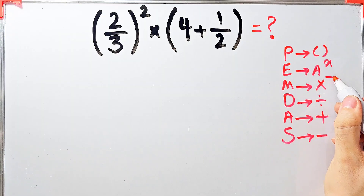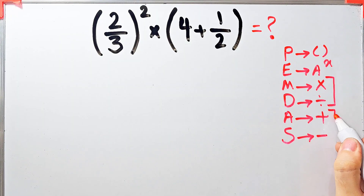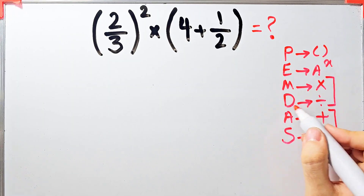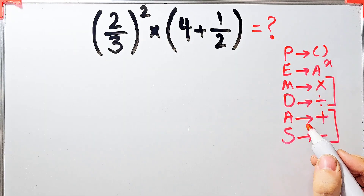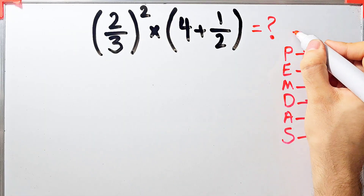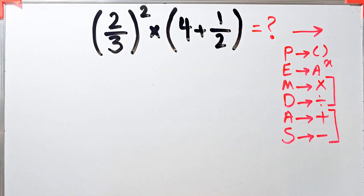Multiplication and division have the same level of priority. Also, addition and subtraction have the same level of priority. When we have both in an expression, we start from the left and simplify the question according to the PEMDAS rule.